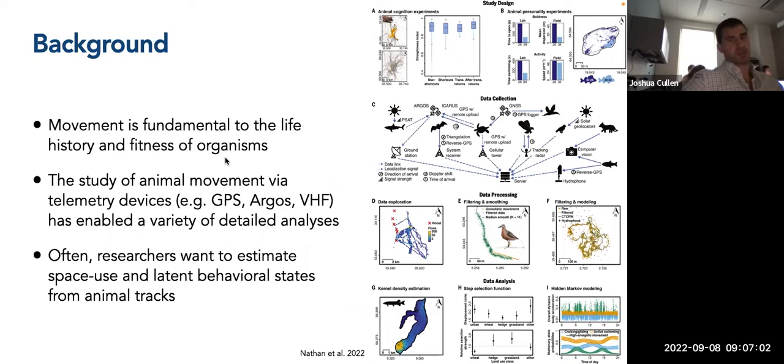There is this nature paper from Ron Nathan and colleagues this past year talking about big data and animal movements. And I think this provides a nice schematic of general study design for animal movements, where you have this data collection phase that's accounting for all these different types of sources of data from these different bio loggers or tags, and ways that you can essentially accomplish investigating animal movement in some form or another.